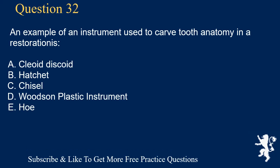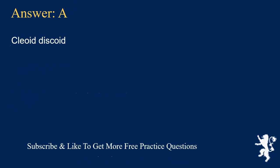Question 32. An example of an instrument used to carve tooth anatomy in a restoration is: A. Cleoid discoid, B. Hatchet, C. Chisel, D. Woodson plastic instrument, E. Hoe. Answer: A. Cleoid discoid.